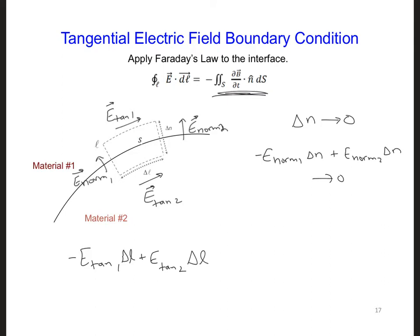However, because we're collapsing the surface S along the material interface, we're letting delta n go to zero, the area of the surface also goes to zero. So S also goes to zero. And in this limit, no flux can pass through the surface. So that also goes to zero, and the right side of the equation is equal to zero.